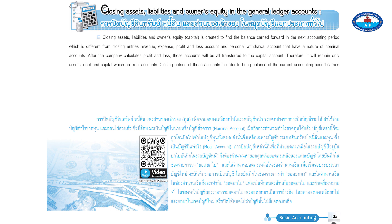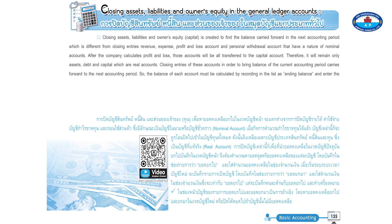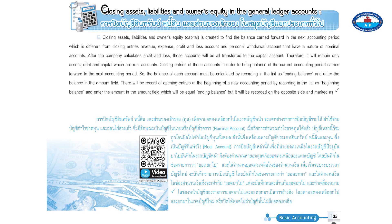Therefore, only assets, debt, and capital — which are real accounts — will remain. Closing entries of these accounts bring the balance of the current accounting period forward to the next. The balance of each account must be calculated by recording in the list as ending balance and entering the amount in the amount field. At the beginning of a new accounting period, opening entries are recorded as beginning balance, entered in the amount field, equal to the ending balance but recorded on the opposite side.